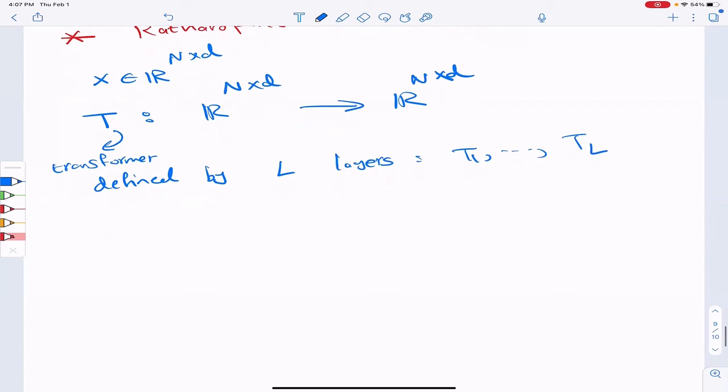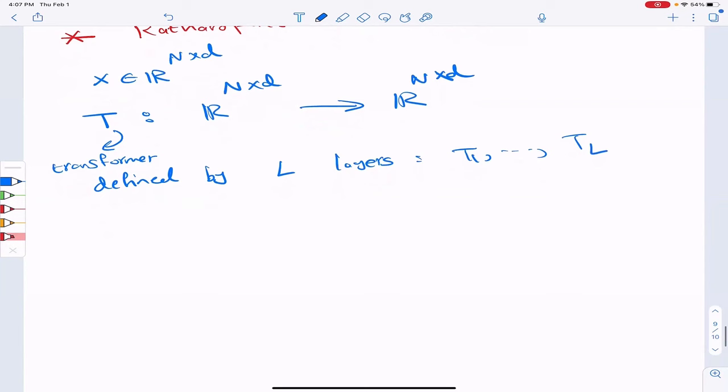And in each layer, we have the following function. When I apply the encoder at layer L, I first apply the attention, self-attention layer to X. Then I have the residual connection. I add the output with the input. And I normalize it. And I push it through a feed-forward network.